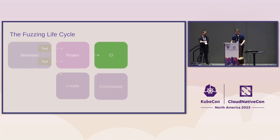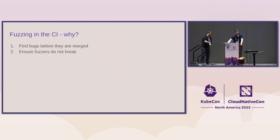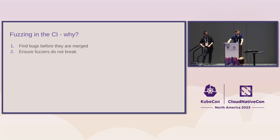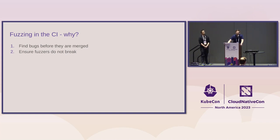Let's talk about the why and how of each of these three ways of running fuzzers. When you fuzz in the CI, the typical reason is to have a bunch of fuzzers that test the code for bugs that PRs introduce — you want to catch bugs in PRs before the code is merged. Another good reason is you want to ensure you don't break your fuzzer build: if you have 70 fuzzers, you don't want to merge a single fuzzer that breaks all the others and prevents them from running.